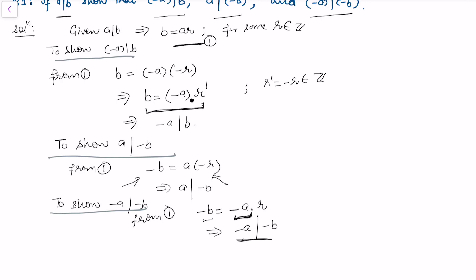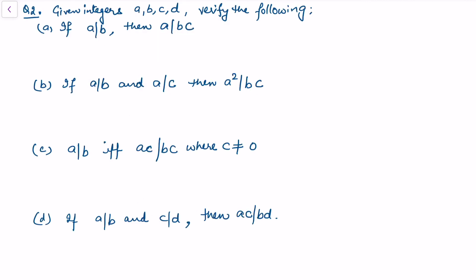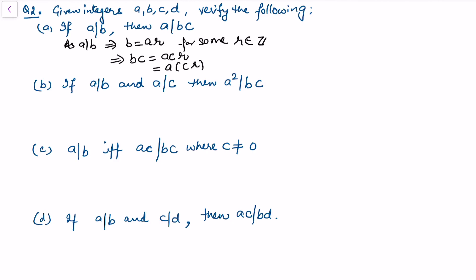In question 2, given integers a, b, c, d, we verify several divisibility properties. The first part: if a divides b, then a divides bc. Since a|b, we write b = a·r for some integer r. Multiplying both sides by c gives bc = a·(cr), and since cr is an integer, a divides bc.